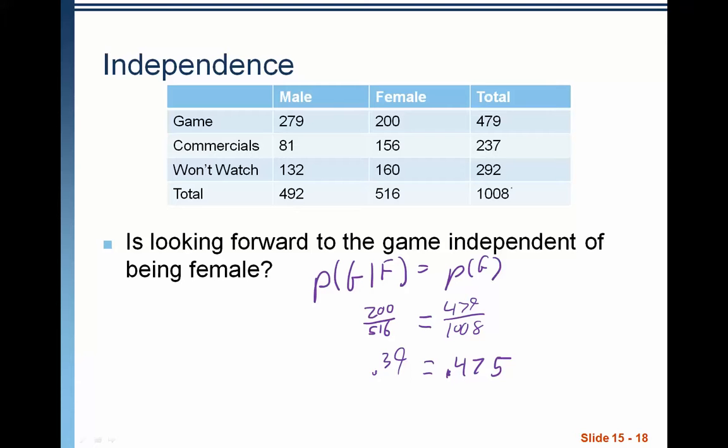So are these independent? Well, 0.39 definitely does not equal 0.475. So these are not independent events. Knowledge that a person is female gives us information, lowers the probability that they are interested in watching the Super Bowl. Therefore, they're not independent events. And we can see that with those probabilities.